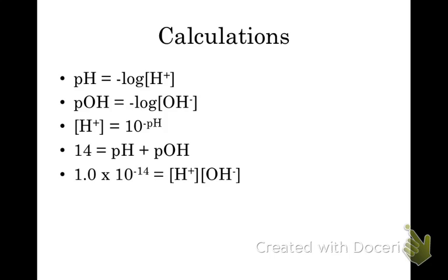Now for the calculations. pH is equal to the negative log of the H⁺ concentration. Don't forget that brackets around H⁺ or OH⁻ mean concentration. For your calculator, you might need to put in the concentration first — like 0.002 — make it negative, then press log. For some calculators, you can simply press log and then enter the number.